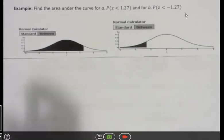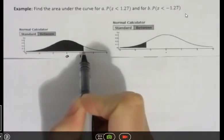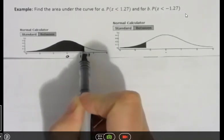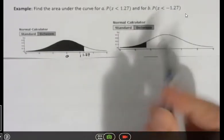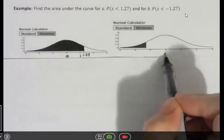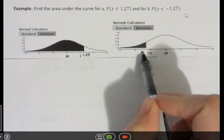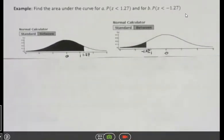If this is zero and this is one, then this point right here is 1.27. And what we're interested in is everything from that point back. So we're shading to the left because we're saying less than. And here we have zero and negative one. So then we're talking about negative 1.27 back here, and we're looking at everything to the left that way.